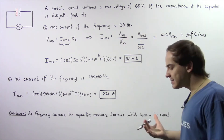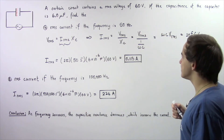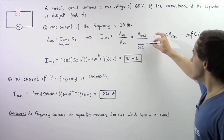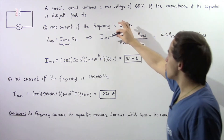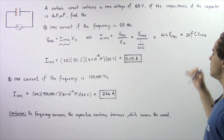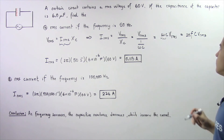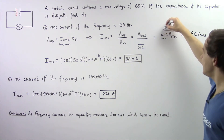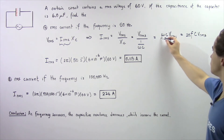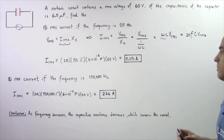Recall that capacitive reactance equals 1 divided by omega multiplied by the capacitance, where omega is our angular frequency. This can be rearranged so that the root mean square current equals omega times C times the root mean square voltage. Since omega equals 2π times the regular frequency, the root mean square current equals 2π times frequency times capacitance times the root mean square voltage.